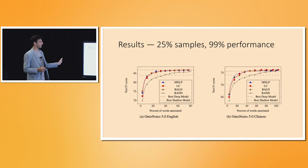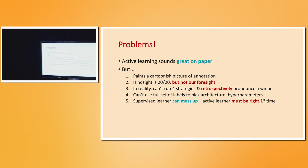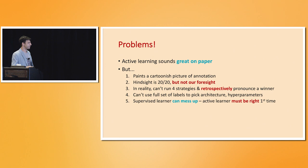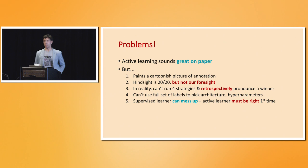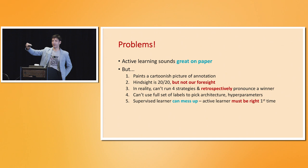Active learning sounds great on paper, but we've painted a cartoonish picture of annotation. The problem is that when papers say 'we took a popular neural network architecture, a popular dataset, pretended not to see the labels, and did active learning,' the labels actually informed the whole development of the techniques — the precise architecture and hyperparameters. If you go to a new dataset where you don't have an architecture already over-optimized to it, the situation is completely different.